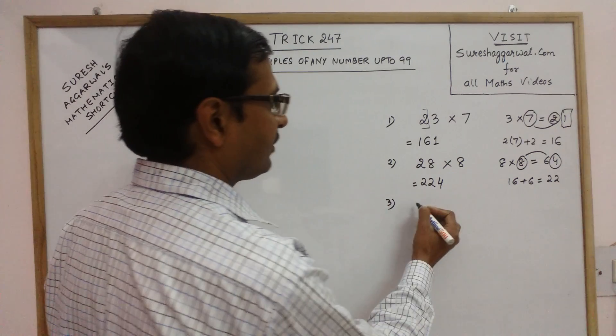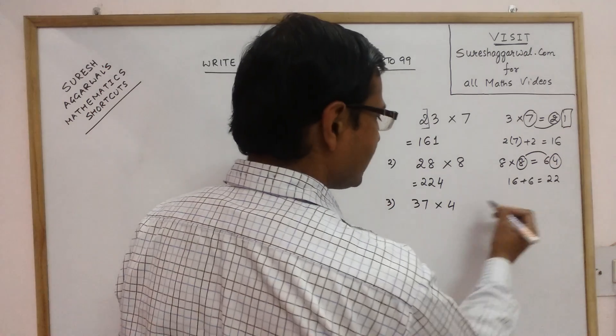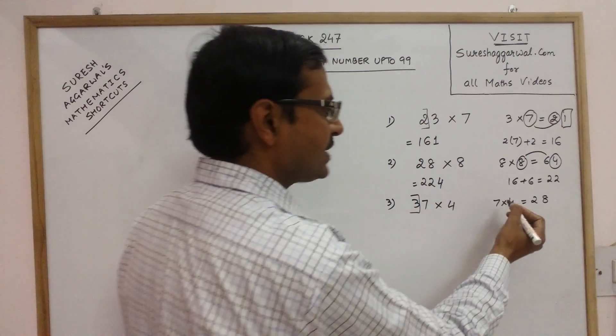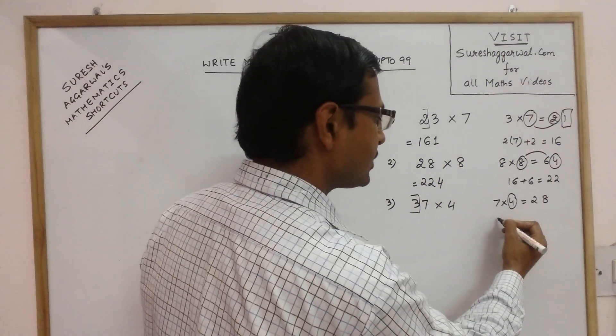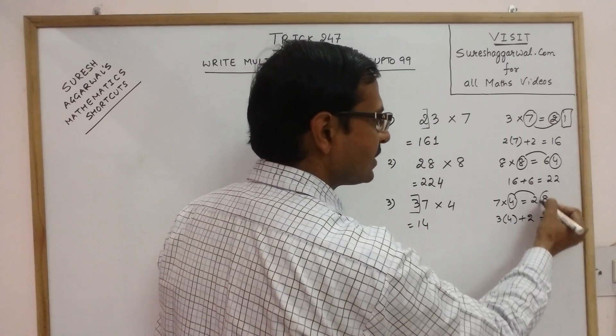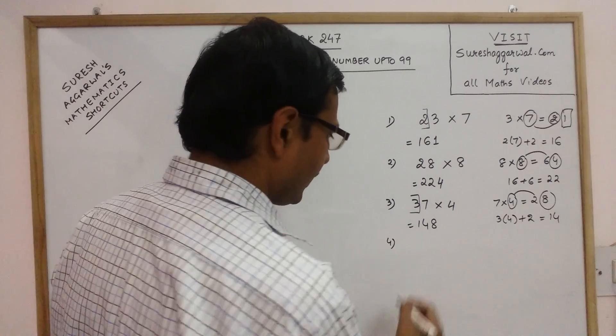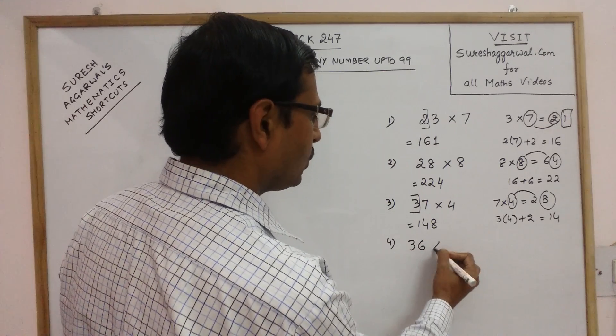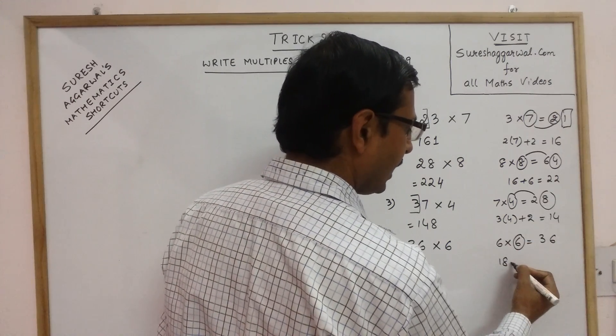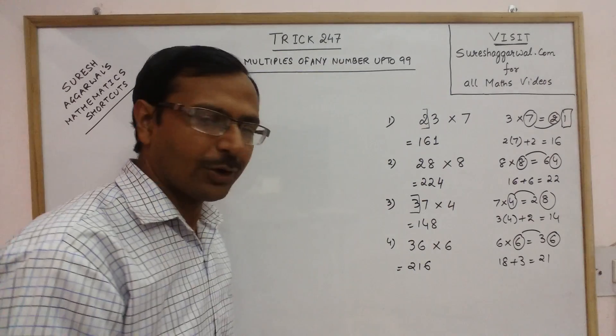Take larger numbers. Say we have 37 and we need to find the 4th multiple of 37. So just do 7 into 4, 28 and now see we have 3 here. So this number has to be multiplied by 3. So 3 fours are 12 and add it to this number 2. We get 14. So 14 is the first part and last part is this number 8, 148 is the product. Take one more number in the series up to 30. Say we have 36 into 6. Now see 6 into 6 is 36. Triple of 6 is 18 and add it to this number 3. We get 21 and last digit is 6. So 216 is the product of 36 and 6.